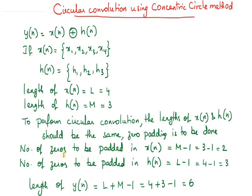The number of zeros to be padded in the first sequence x(n) is equal to M minus 1, where M is the length of h(n). The number of zeros to be padded in h(n) is equal to L minus 1, where L is the length of x(n). So here we get two zeros in x(n) and three zeros in h(n).